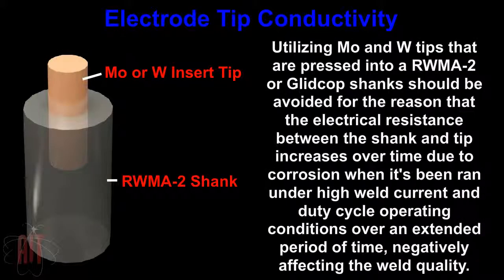Utilizing molybdenum and tungsten tips that are pressed into RWMA-2 or Glidkop shanks should be avoided, because the electrical resistance between the shank and the tip increases over time due to corrosion when run under high weld current and duty cycle operating conditions over an extended period of time, negatively affecting weld quality.